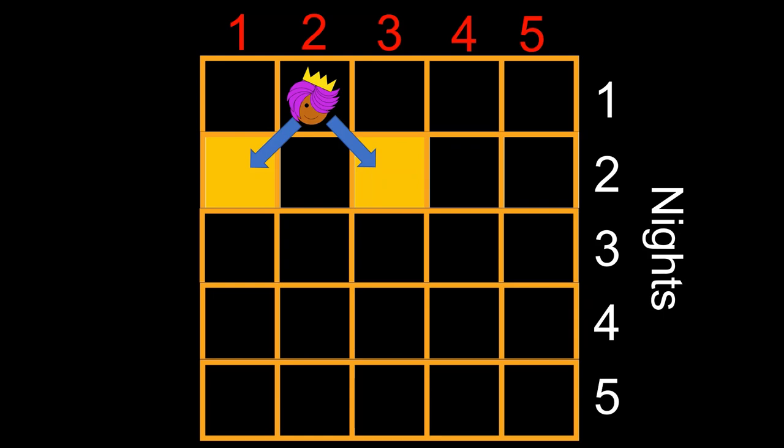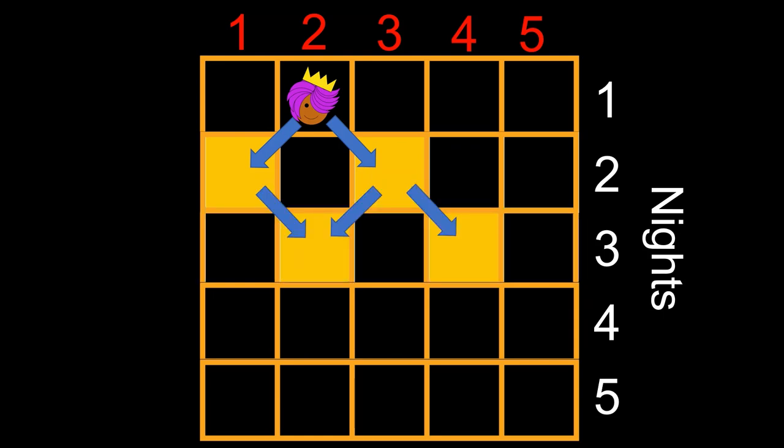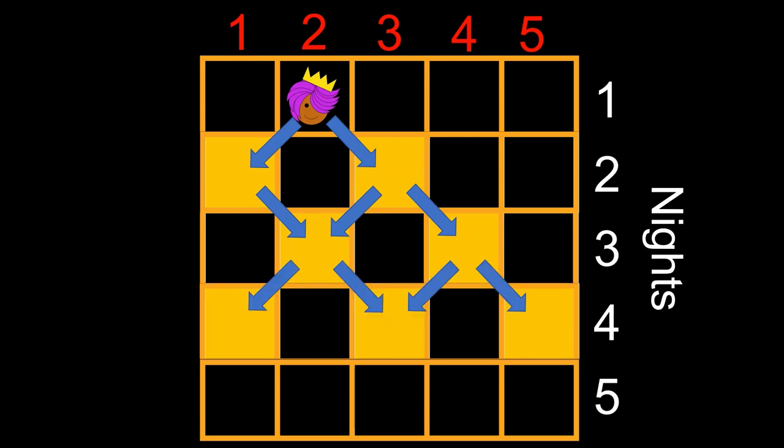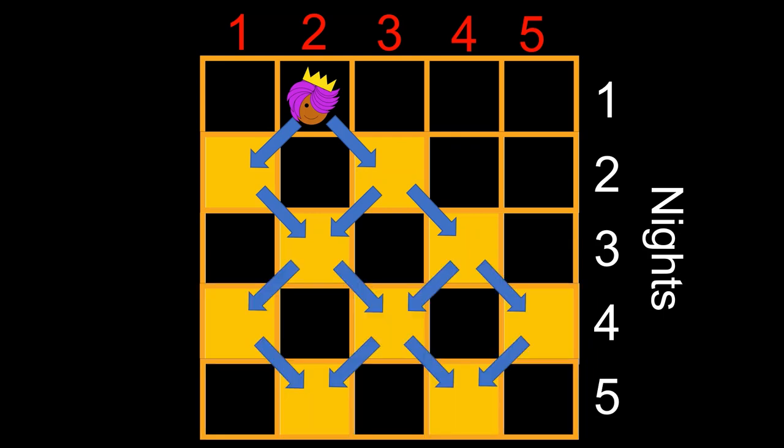In fact, we can very easily see the next night's possibilities and the night after that. Because she can only move diagonally, she can only visit some of the squares on this grid, and this makes it look a bit like a chessboard.